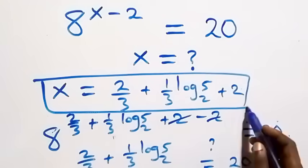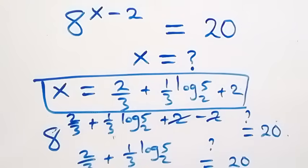We conclude that x equals 2 over 3, plus 1 over 3 times log 5 base 2, plus 2 satisfies the given problem. Thank you for watching — don't forget to subscribe to Master Maths Class, turn on the notification bell, and share this video. Give it a thumbs up, put your comment below, see you in the next class. Bye for now.